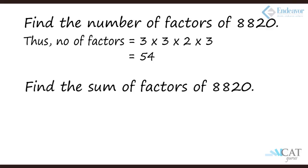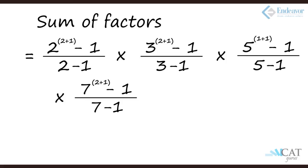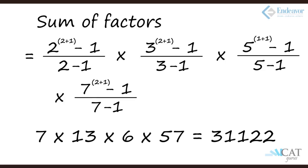Now a different question: what is the sum of the factors of 8820? For the sum, we raise each prime's exponent by 1 and apply the formula (pⁿ⁺¹ − 1) / (p − 1) for each prime. So it becomes: (2³ − 1)/(2 − 1) × (3³ − 1)/(3 − 1) × (5² − 1)/(5 − 1) × (7³ − 1)/(7 − 1). Multiplying these together gives the sum of all factors of 8820. This approach can also be extended to find perfect cube factors and even higher power factors as needed.